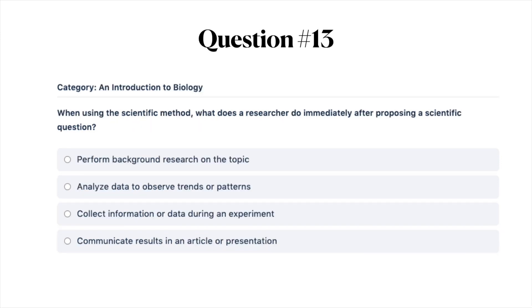Next question: when using the scientific method, what does a researcher do immediately after proposing a scientific question? A, perform background research on the topic; B, analyze data to observe trends or patterns; C, collect information or data during an experiment; or D, communicate results in an article or presentation.